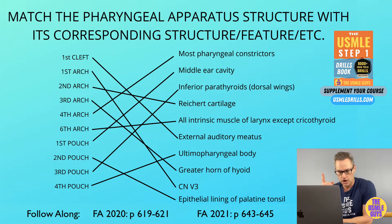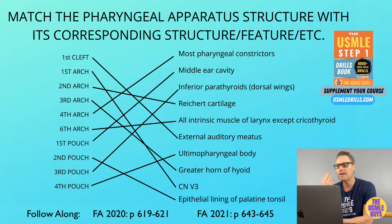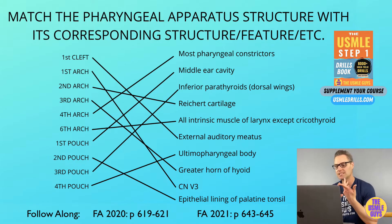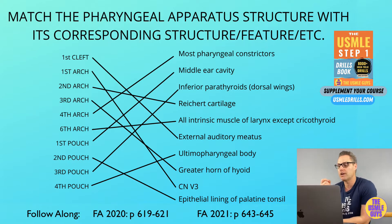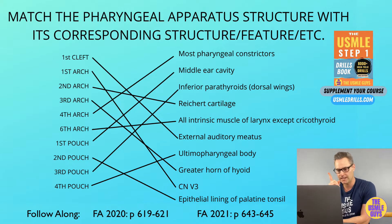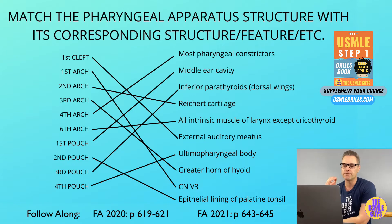The first pharyngeal arch is comprised of two parts: the distal portion, which is the maxillary prominence, and the ventral portion, which is the mandibular prominence. The maxillary prominence becomes the maxilla, the zygomatic bone, and part of the temporal bone. It's also associated with the maxillary cartilage, which gives rise to the incus. The artery of the first pharyngeal arch becomes the terminal portion of the maxillary artery, a branch of the external carotid. The associated nerve is the trigeminal nerve. The first arch gives rise to the muscles of mastication, innervated by cranial nerve V3.